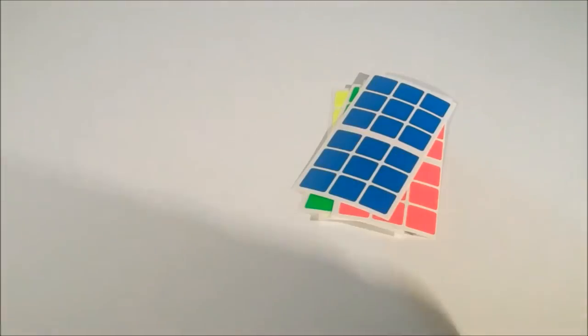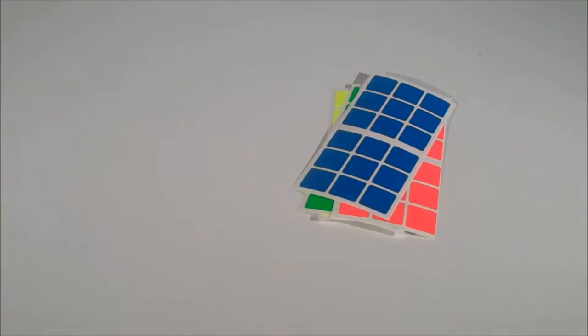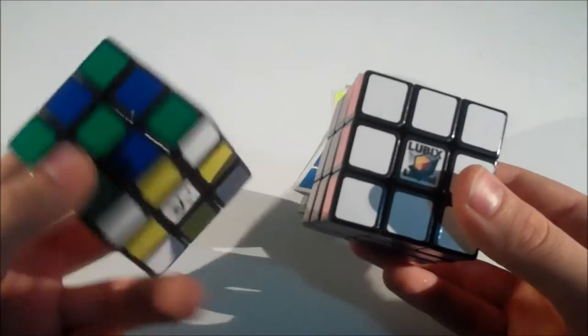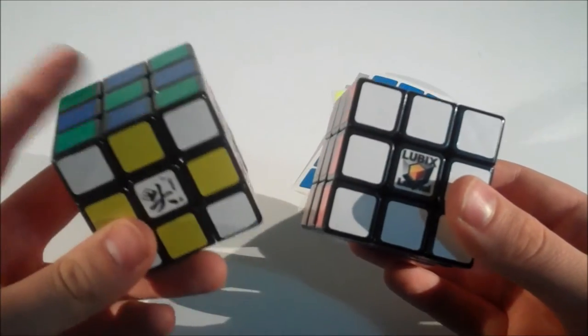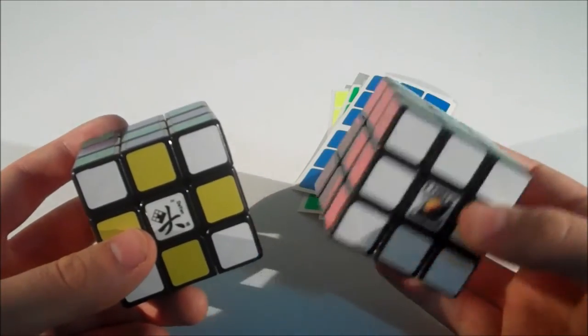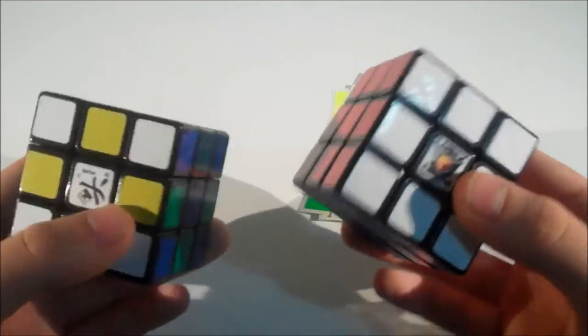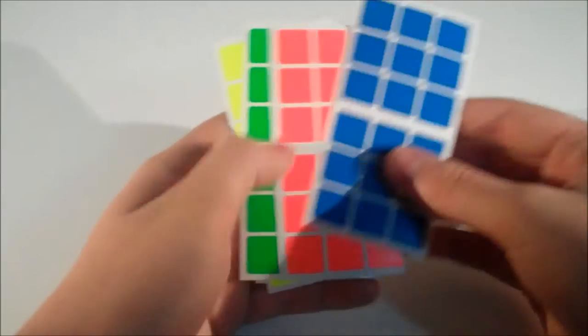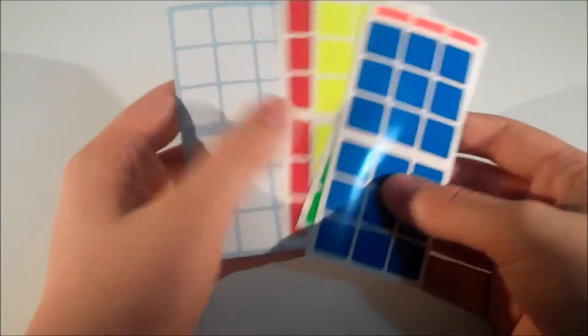So I'm going to be putting these on my main speed cubes which are two Lund Hoys. Obviously the Lubix Lund Hoi and my regular Lund Hoi. This is what I practice on a lot and this is what I do averages on and stuff. So it'd be really cool to get them on both of these cubes. I'm going to put these on now and then I'll get back to you guys when I've done that.